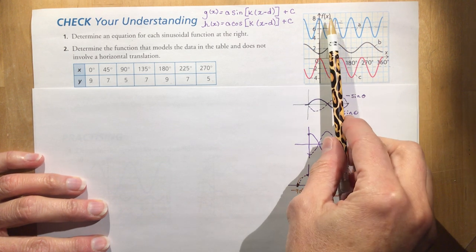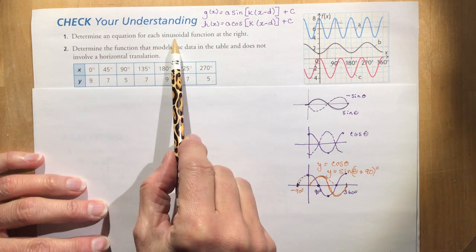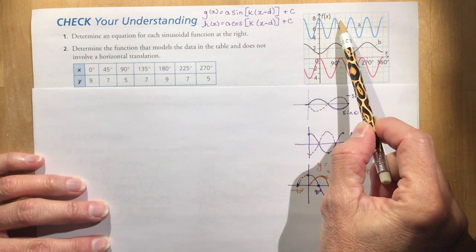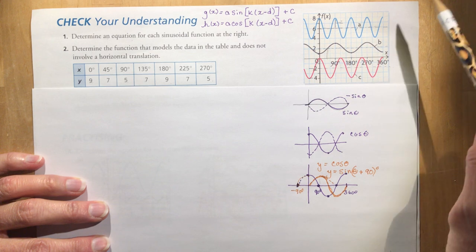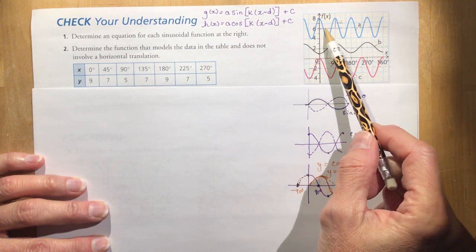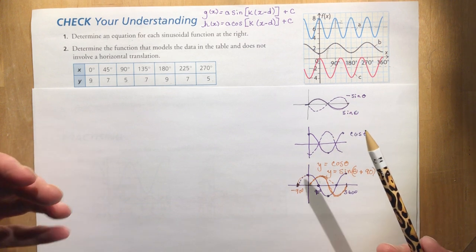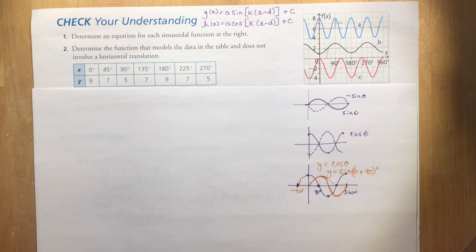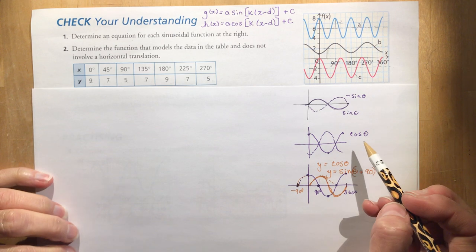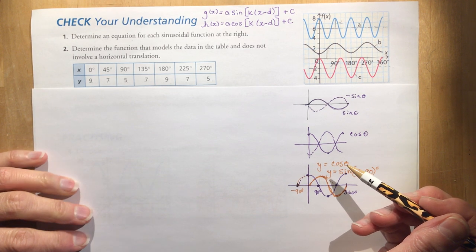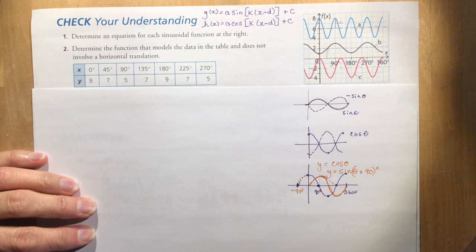When a question says 'determine an equation,' it means 'an' equation — there are many different equations depending on where you start. Everything can be shifted because it's a continuous periodic function. When finding an equation, you want the simplest form. If your answer differs from the textbook's, try plugging in a value for x into both equations and check that you get the same answer — that confirms you're correct.